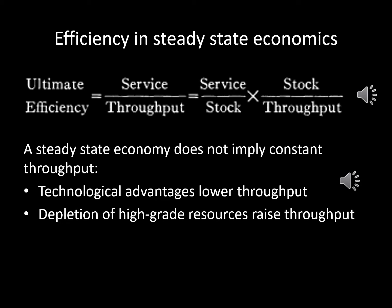Efficiency is defined as the amount of welfare or happiness that we get per throughput of material flow. This ultimate efficiency measure can be split into service efficiency — service derived per stock — and maintenance efficiency, which refers to the amount of throughput it takes to sustain a certain chosen level of stocks of infrastructure and other artifacts. Note that a steady state economy does not imply constant material flows.